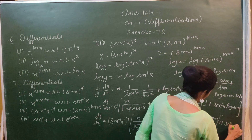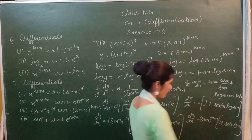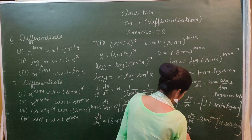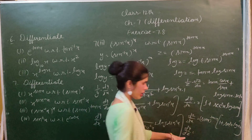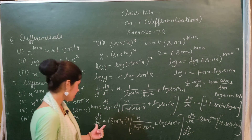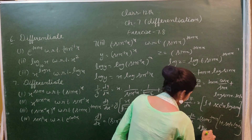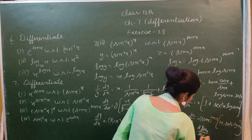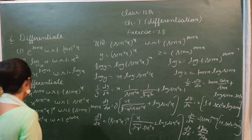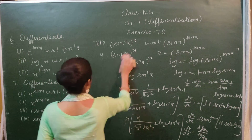So dz/dx = (sin x)^(tan x) times (1 + secant square x times log(sin x)). Then we find dy/dz = (dy/dx) divided by (dz/dx). You can apply these values and compute the final answer yourself.